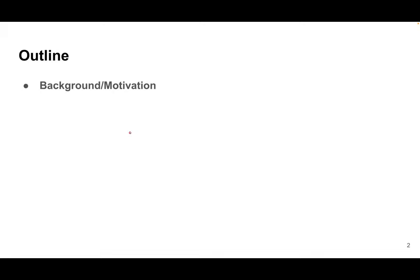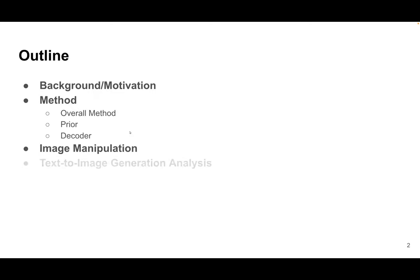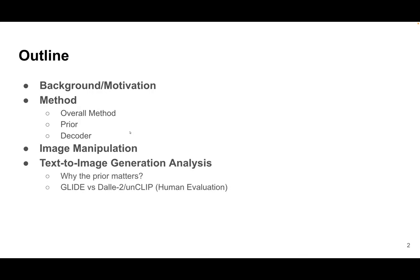To start, I will explain the outline. I will begin with the background motivation. Later, Sounding will talk about the methods, including the overall method, prior, and decoder. Then Li will discuss image manipulation, and Kevin will discuss the text-to-image generation analysis: why priors matter, GLIDE versus DALL-E, diversity and fidelity tradeoff with guidance. At the end, he will state the limitations.